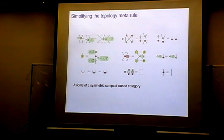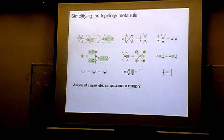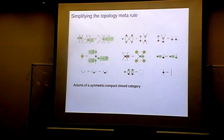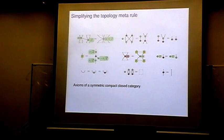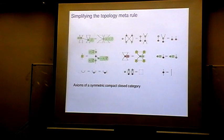This is the final set of rules for the ZX calculus. This set is still complete, and we've gone from 12 rules — each of which had up to four different versions — down to just nine rules (or ten if we count two versions of one rule), and none of them come in extra versions beyond what's listed.